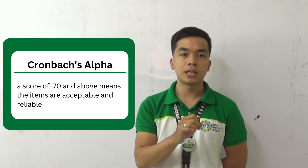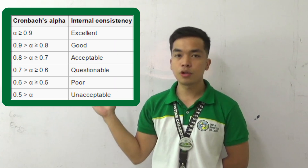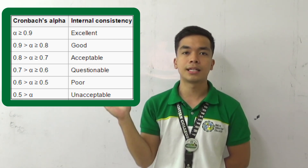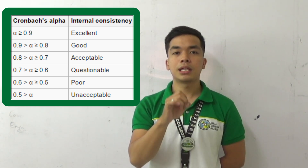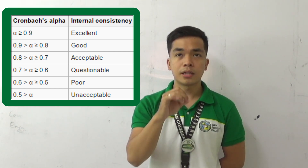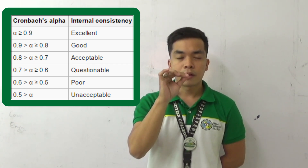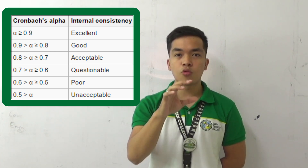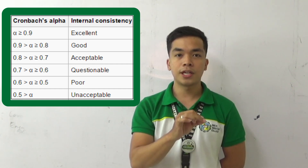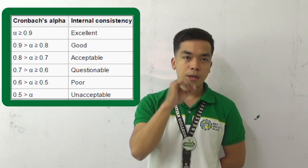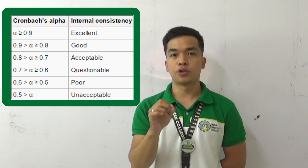Remember that in Cronbach's alpha, the accepted degree of internal consistency coefficient is around 0.70 to 0.95. It will be shown in the video — the levels about Cronbach's alpha. So 0.70 is the acceptable part and 0.95 is the excellent part. If yung questionnaire ninyo is nakakuha ng below 0.70 na internal consistency coefficient, ibig sabihin questionable or poor yun, and it is subject for revision or rejection.